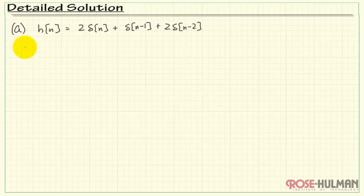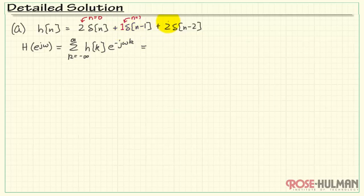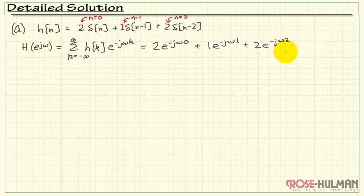Let's move into the details. Our frequency response equation includes only three values from the summation: two times e to the minus j omega zero with k equals zero, then the term with k equals one, and finally the term with k equals two.